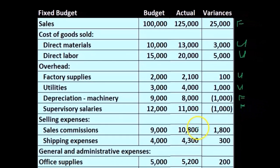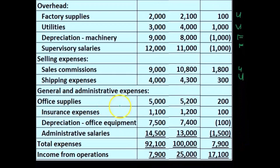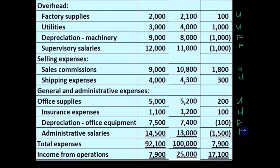The selling expenses are higher in actual than expected, so that's unfavorable. Depreciation is favorable, and administrative is also favorable. The bottom line is that total expenses are unfavorable, yet net income is higher than we expected, so that's good.